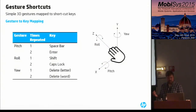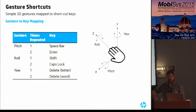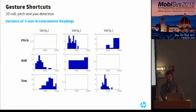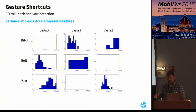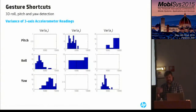One nice feature of Typing Ring is gesture shortcuts. We provide simple 3D gestures where the user rotates the hand around one of three axes — roll, pitch, or yaw — and map these to commonly used keys such as space bar, backspace, or enter. We use a simple threshold-based algorithm to distinguish between these gestures by plotting three-axis accelerometer readings. For pitch, there's almost no variance in the x-axis while the other two axes show variance; similar trends hold for yaw and roll. One axis always shows no variance while the others do, which is how we distinguish between the motions.